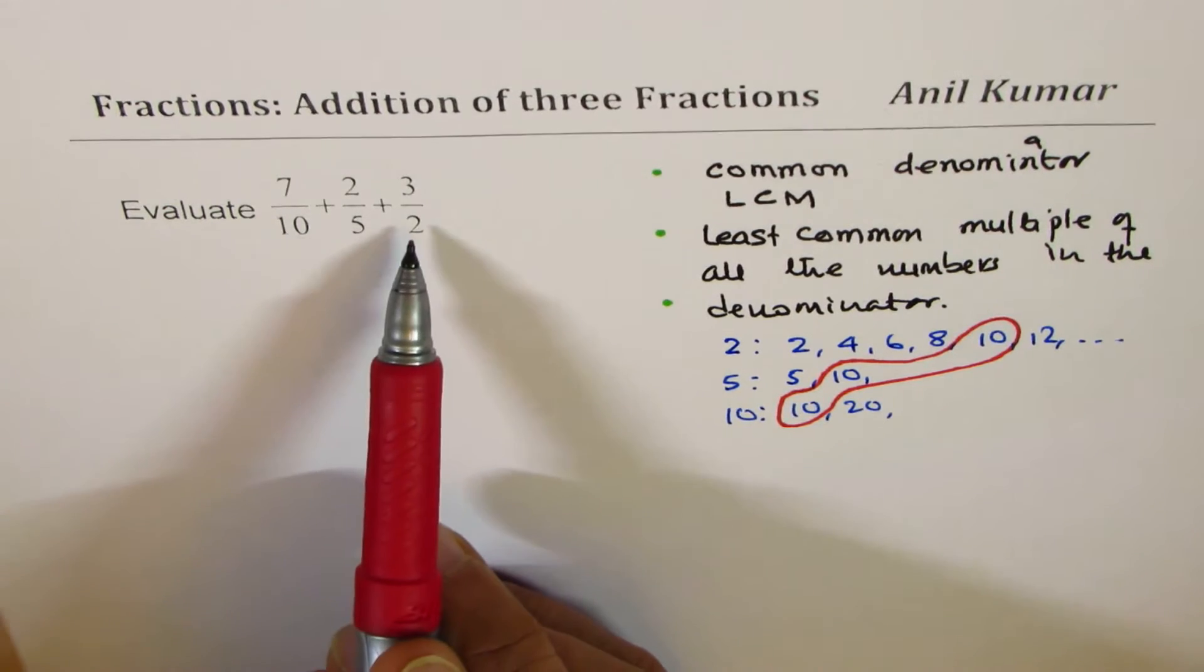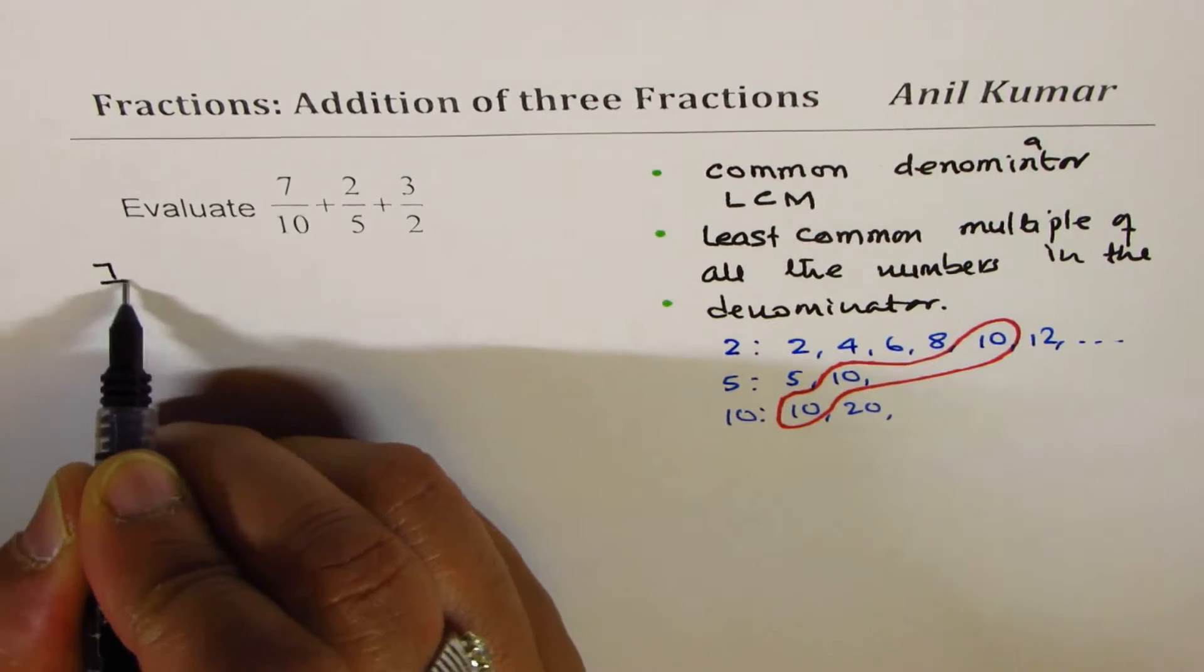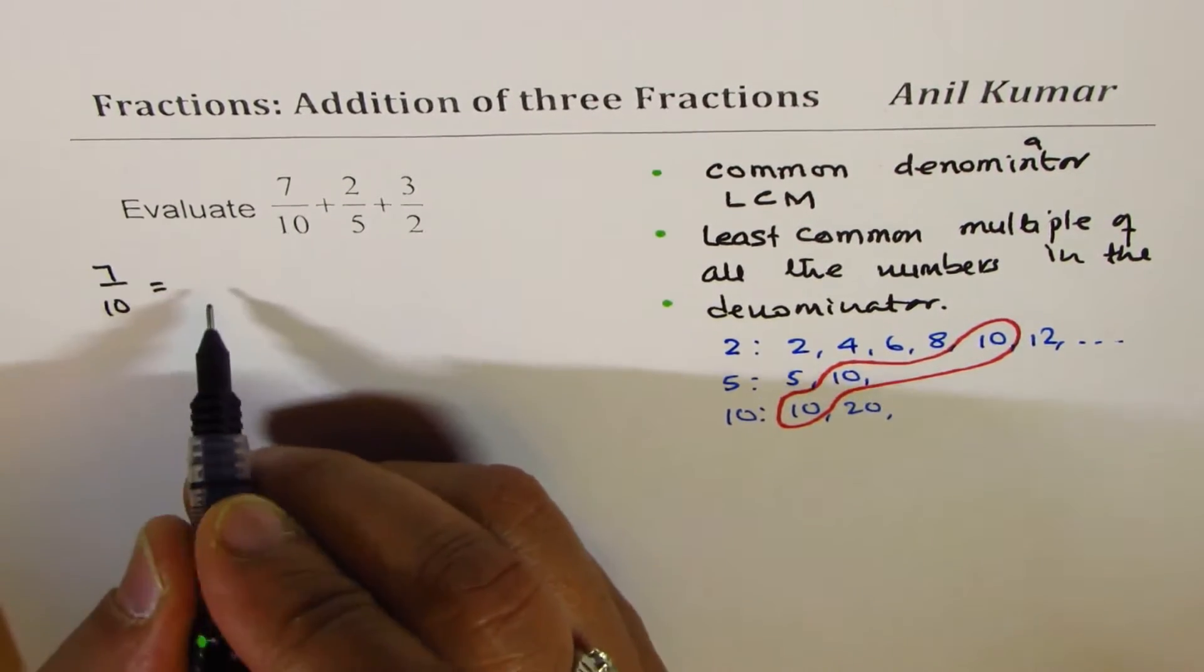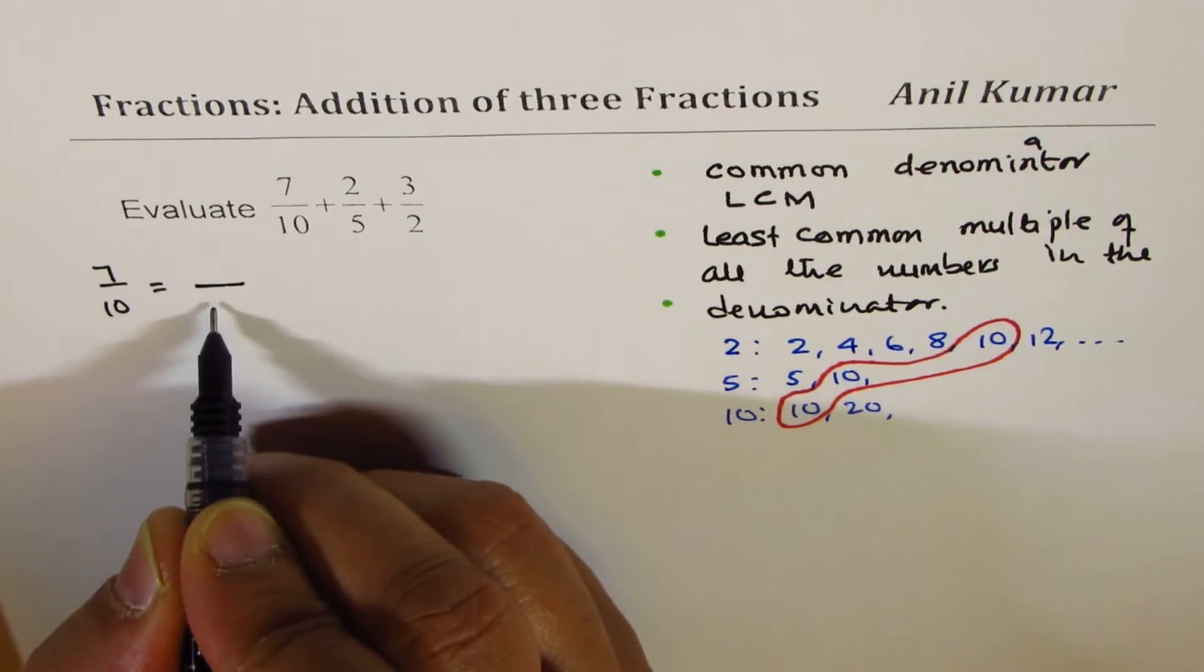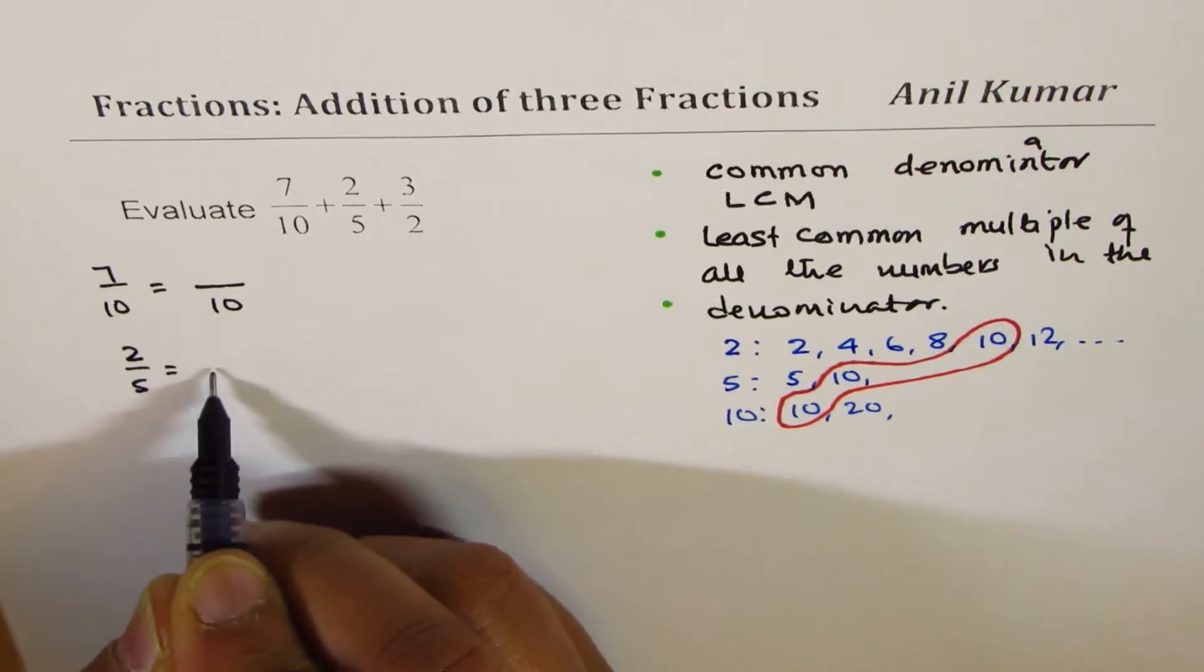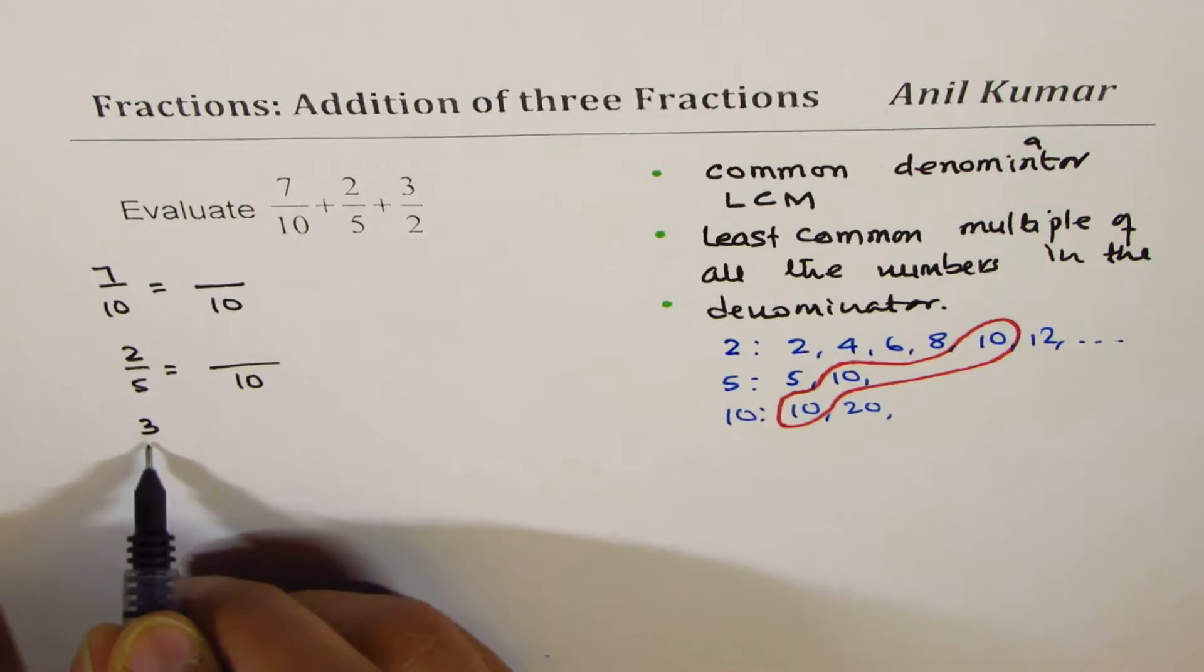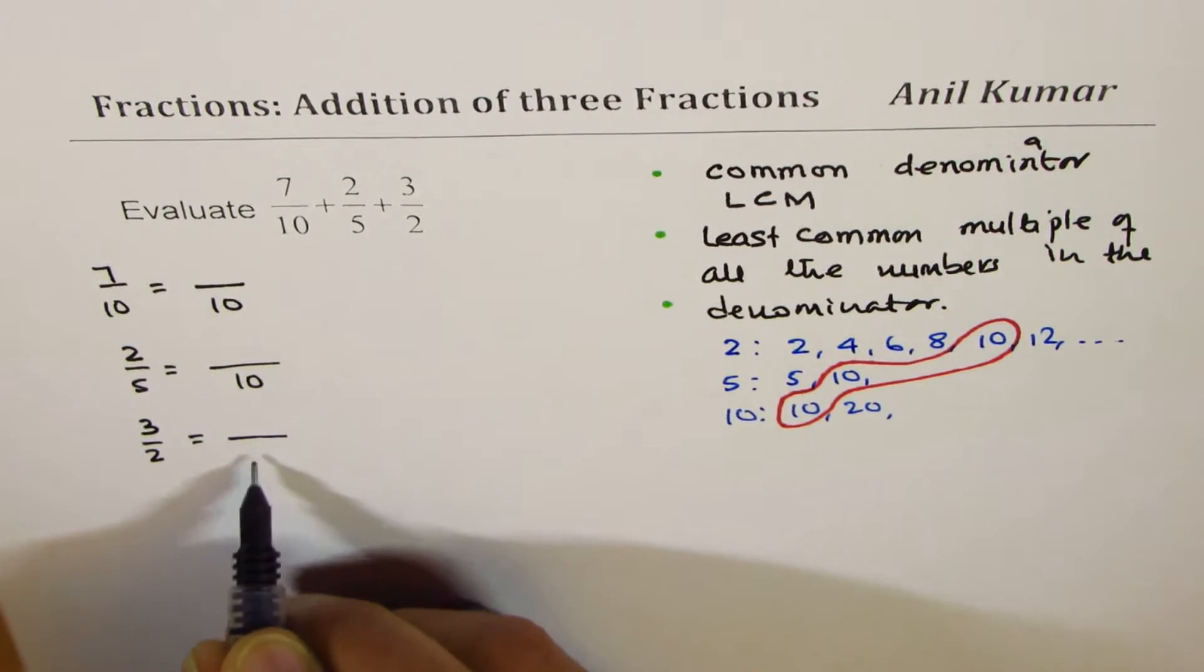We could write each fraction with the denominator of 10. So the idea here is to write 7 over 10 as equal to something over 10, 2 over 5 as equal to something over 10, and also 3 over 2 as something over 10.